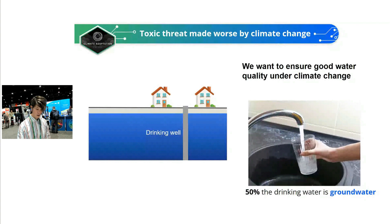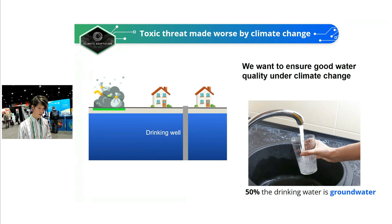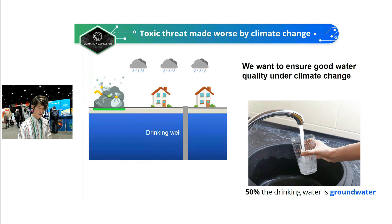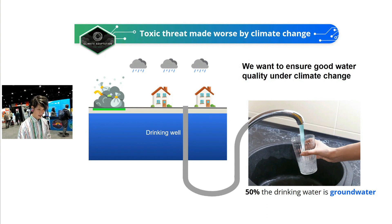Water is important in human activity — statistics show that 50% of drinking water is groundwater. If contamination occurs somewhere close to a residential area, and global warming leads to more frequent extreme precipitation events, those precipitation events might push contaminants into our drinking water. So it is important to think about these effects.